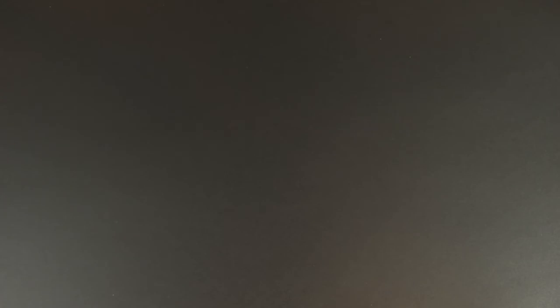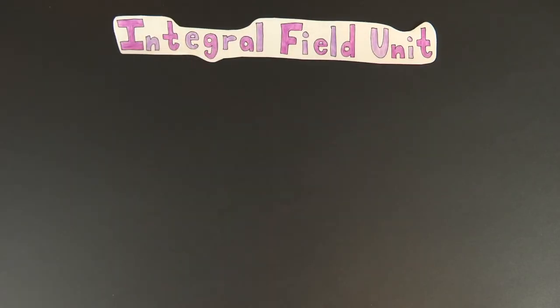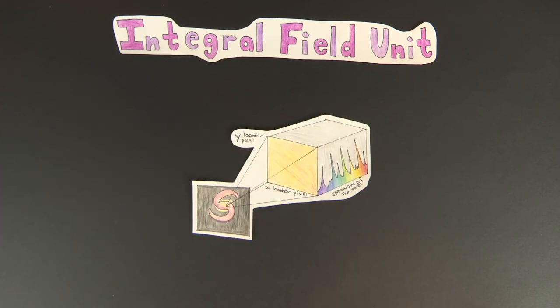For analysing extended objects in one image, such as nebulae or galaxies, astronomers use Integral Field Units, or IFUs, through Integral Field Spectroscopy, which records the spectrum for every pixel, creating a 3D image.